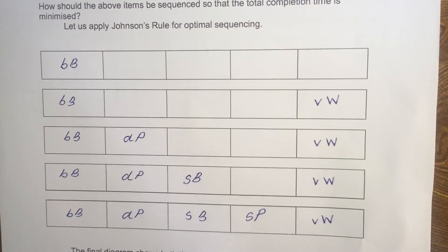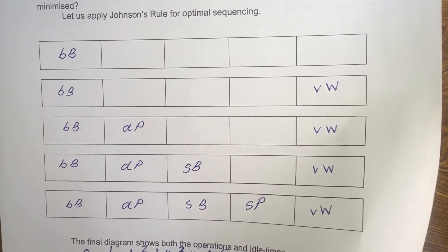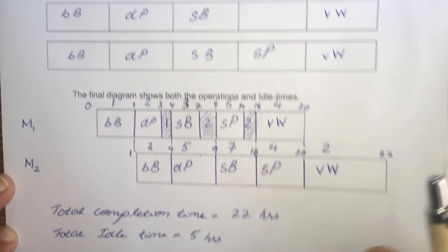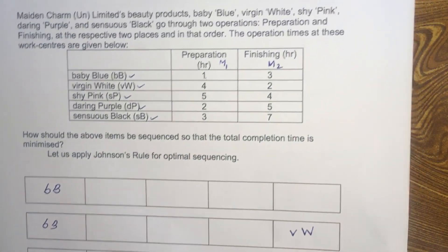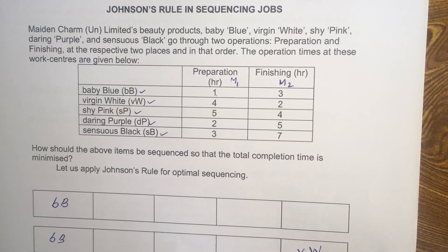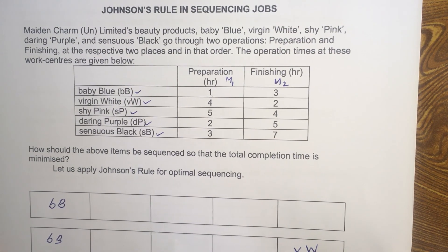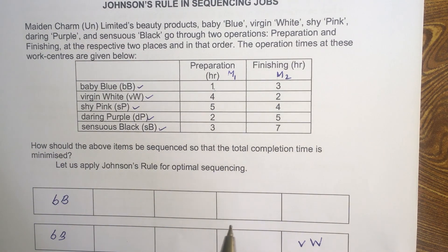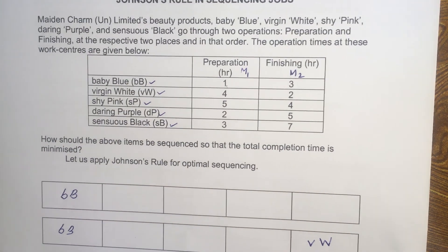This is how you sequence or prioritize jobs in different work centers using Johnson's Rule, and how you find the total completion time. I will do another problem on Johnson's Rule — a similar problem where N number of jobs pass through two machines or two work centers. Stay tuned.